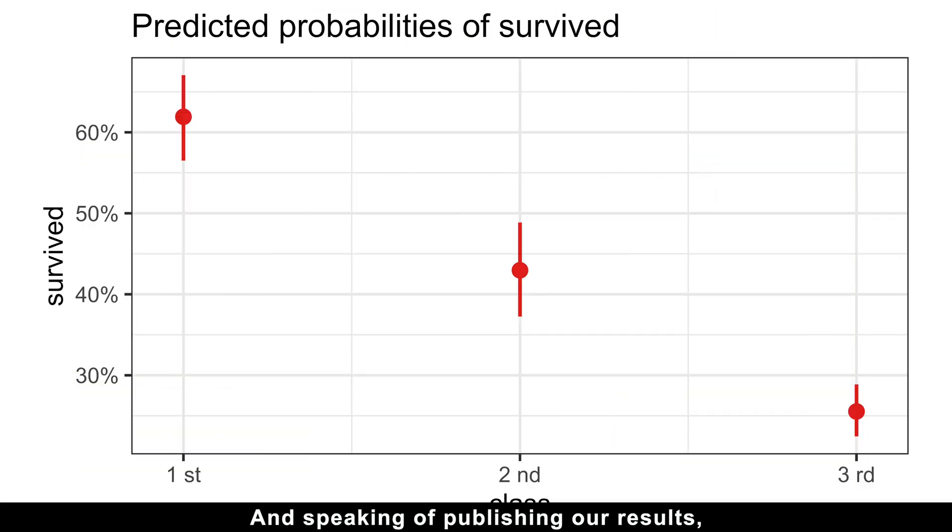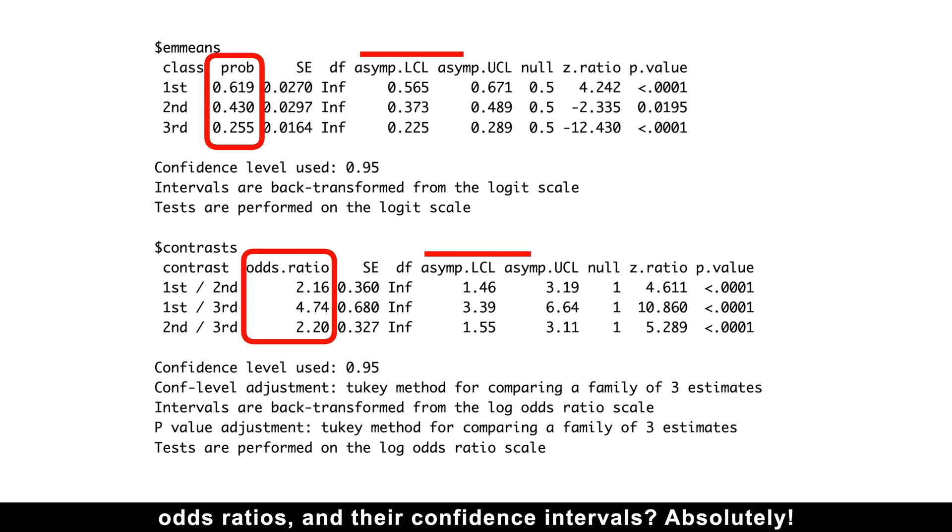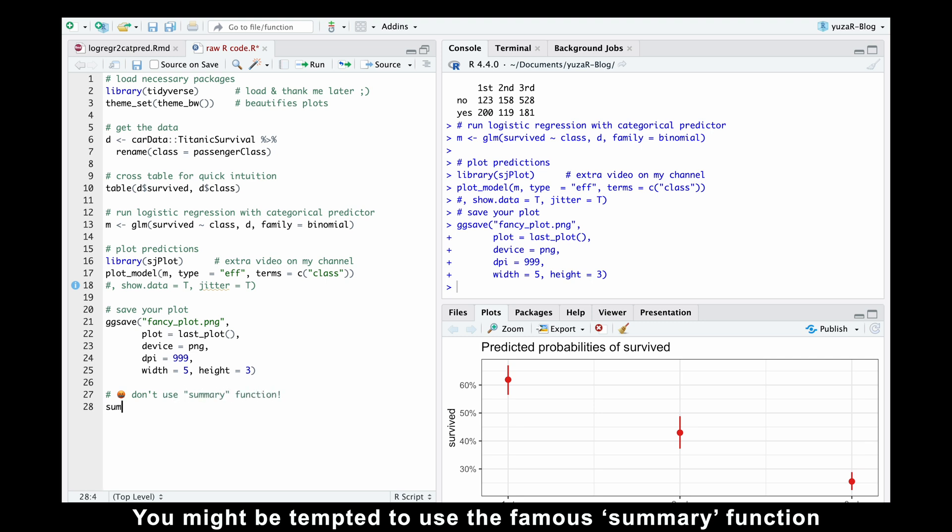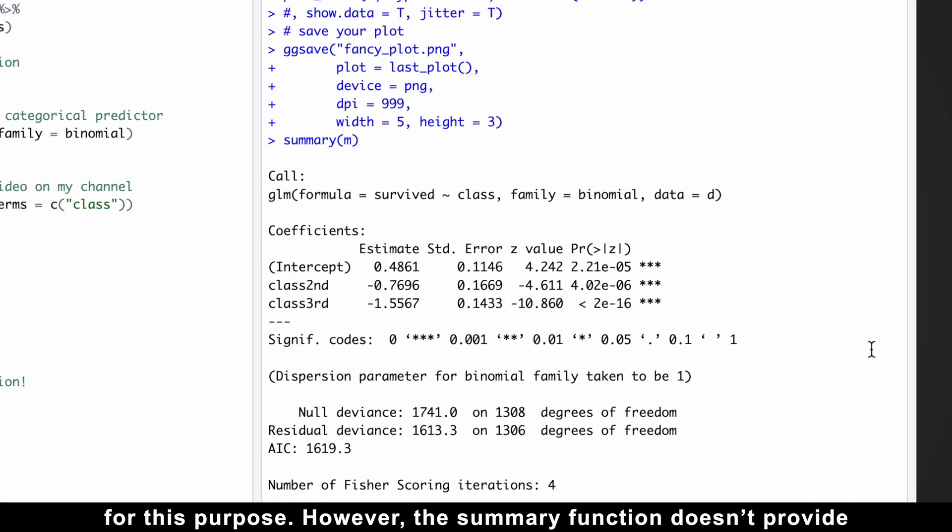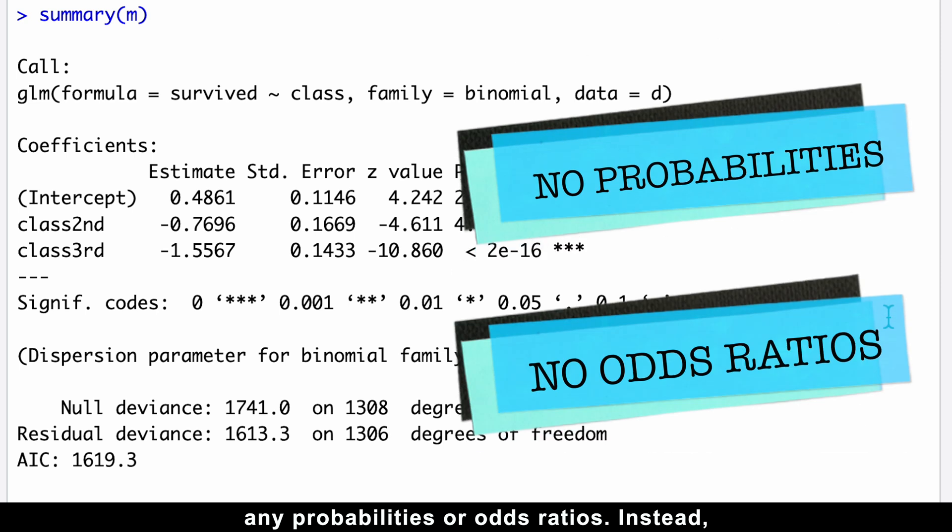And speaking of publishing our results, wouldn't we also want to report the exact probabilities, odds ratios, and their confidence intervals? Absolutely. To do that, we'll need to extract those precise numbers from our model. You might be tempted to use the famous summary function for this purpose. However, this summary function doesn't provide any probabilities or odds ratios. Instead, it shows the log odds for the first class.